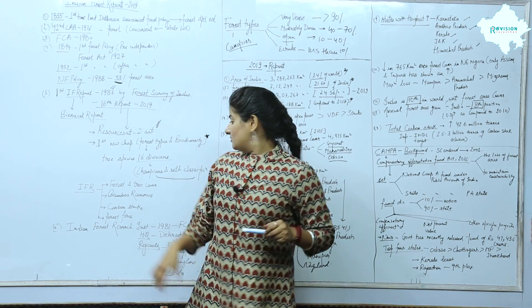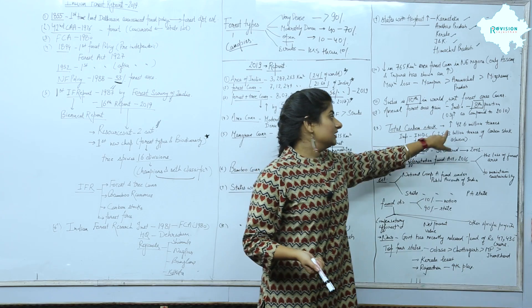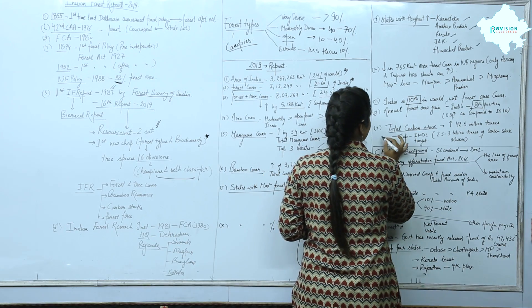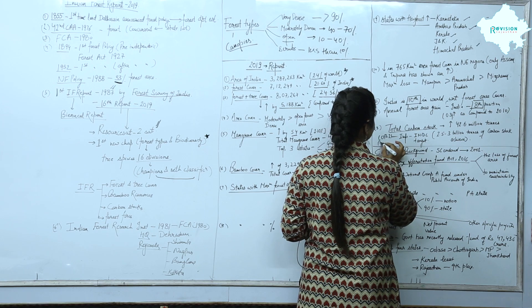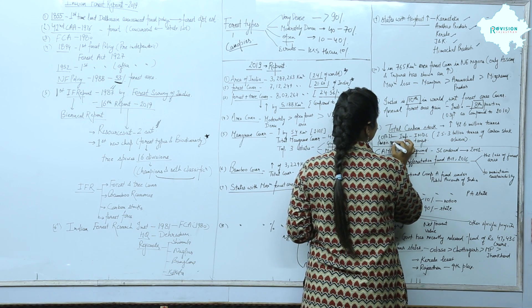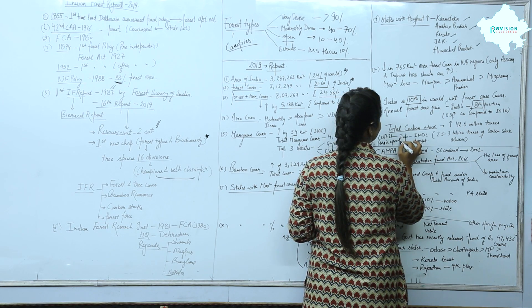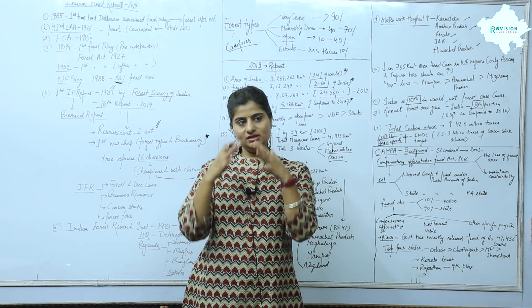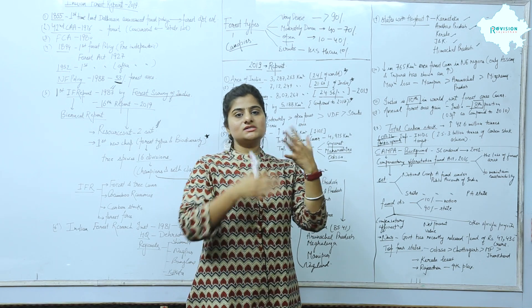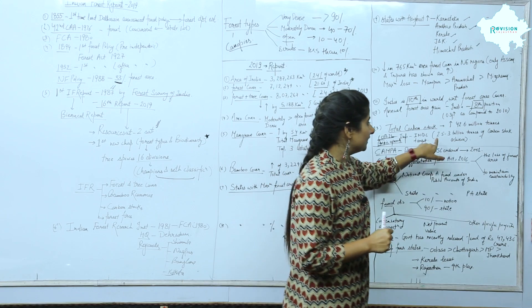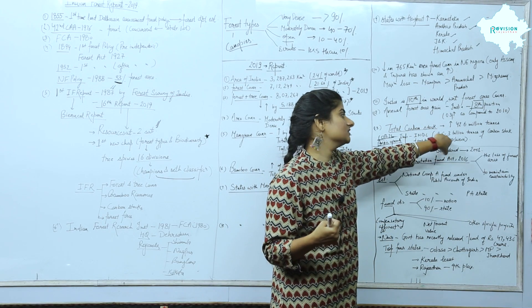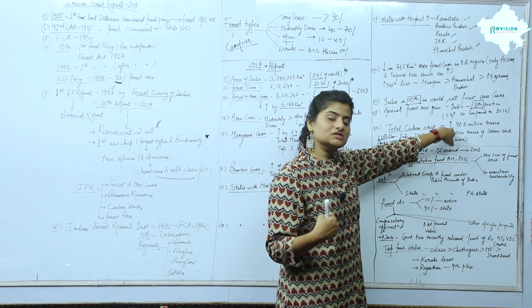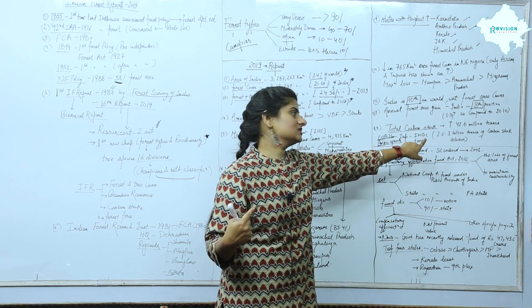Total carbon stock: it is a positive sign that total carbon stock has increased by 42.6 million tons. Under COP21 and the Paris Agreement, countries have set INDC targets. India's target is 2.5 to 3 billion tons of carbon stock. So the increase of 42.6 million tons is a positive sign that we can achieve this INDC target.